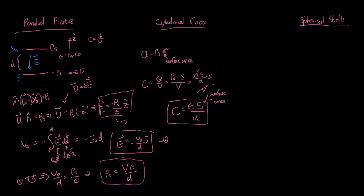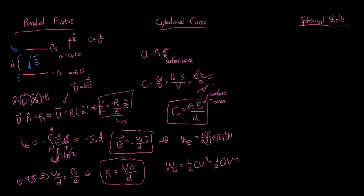This matches our prior understanding of capacitors: capacitance is inversely proportional to the distance between the plates, so the closer the plates, the greater the capacitance. Also, the larger the surface area, the more charge you can store, so the greater the capacitance. The constant relating the area-to-distance ratio is epsilon. To conclude the parallel plate discussion, the energy stored is one-half the volume integral of epsilon E squared dV, which gives one-half CV squared, also equal to one-half QV or one-half Q squared over C.